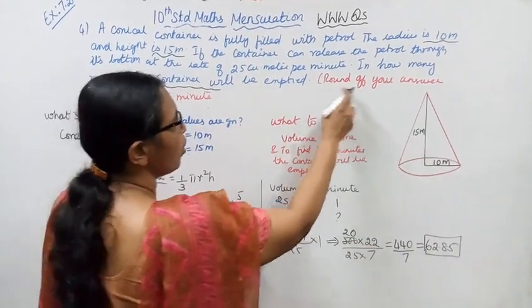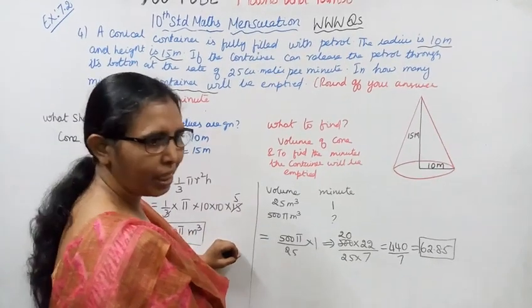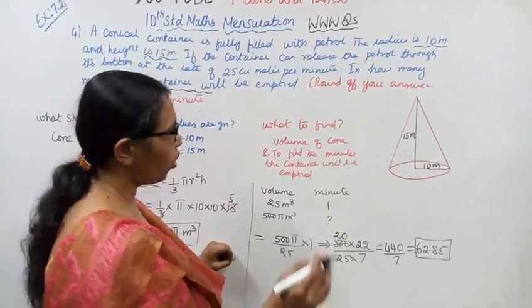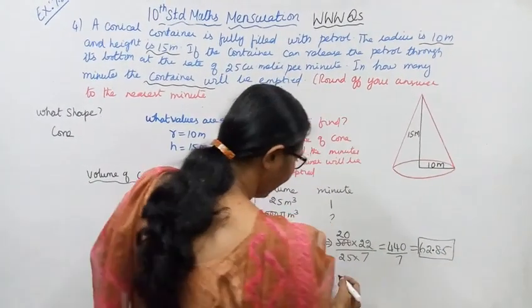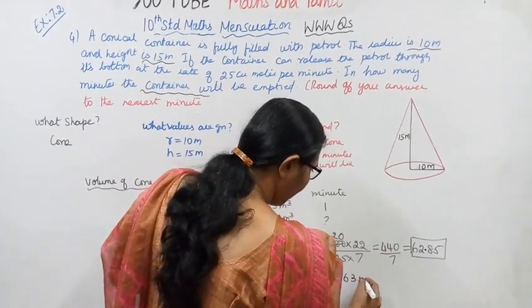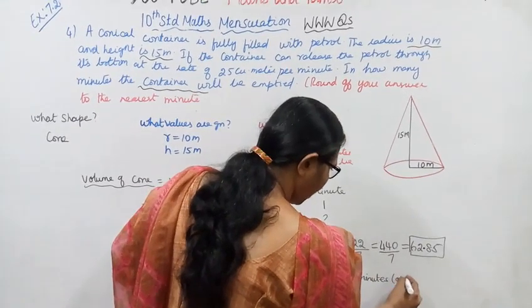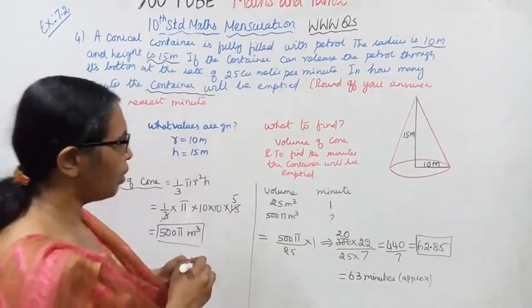The answer is 62.85. Round off your answer to the nearest minute. 62.85 rounds to 63 minutes. The container will be empty in 63 minutes approximately.